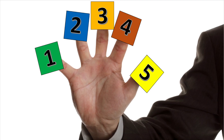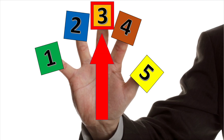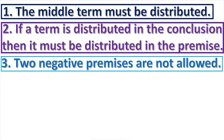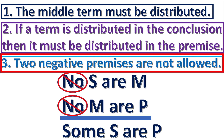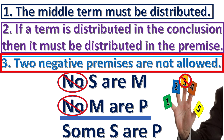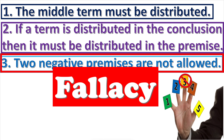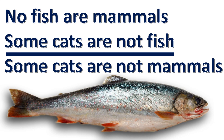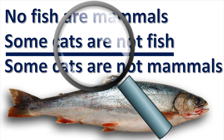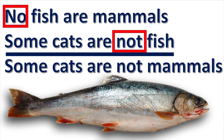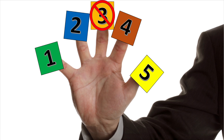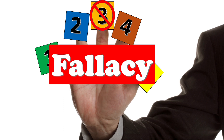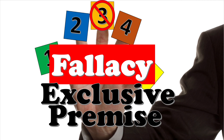Now I will introduce rule three. Rule three says that two negative premises are not allowed. If a syllogism breaks rule three, the fallacy of exclusive premises is committed. Notice both premises are negative — rule three is broken and the fallacy of exclusive premises is committed.